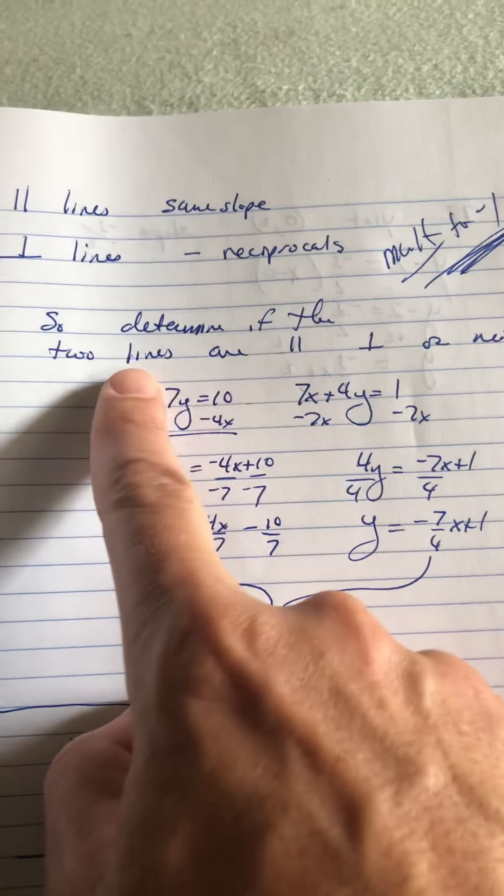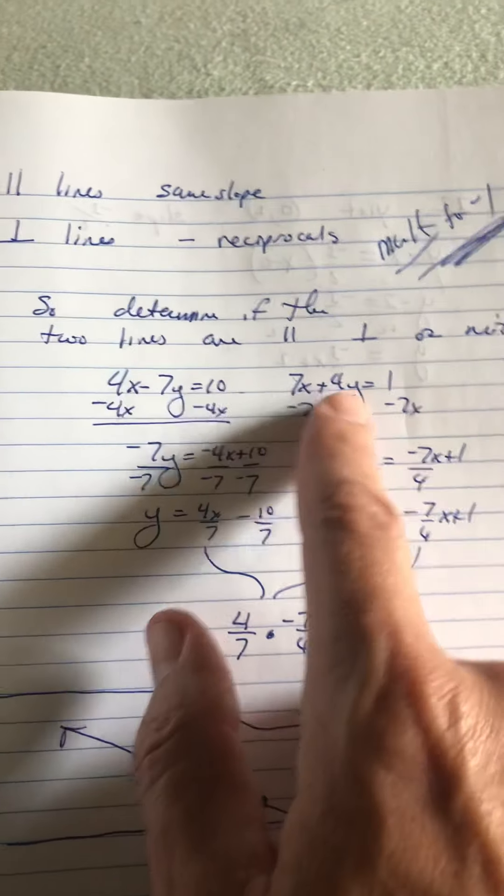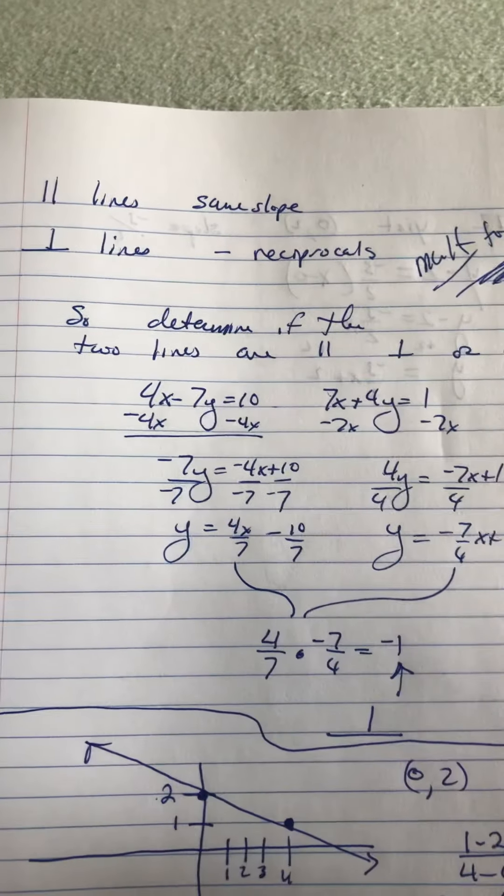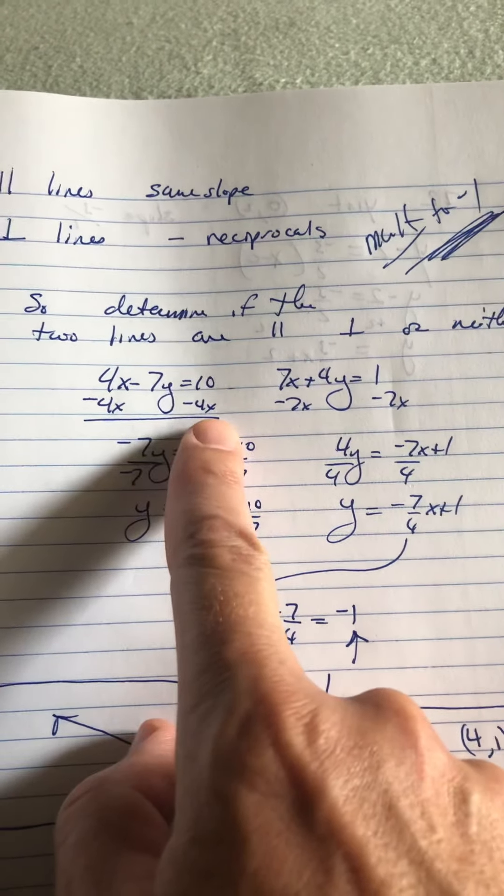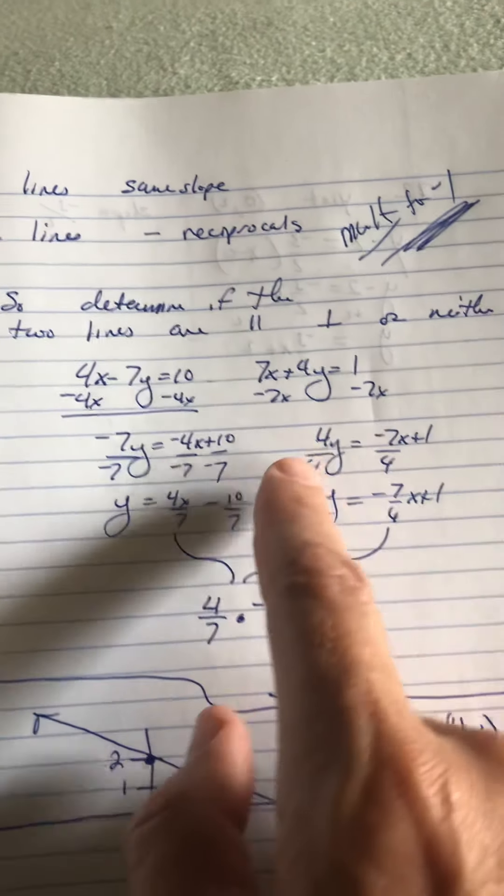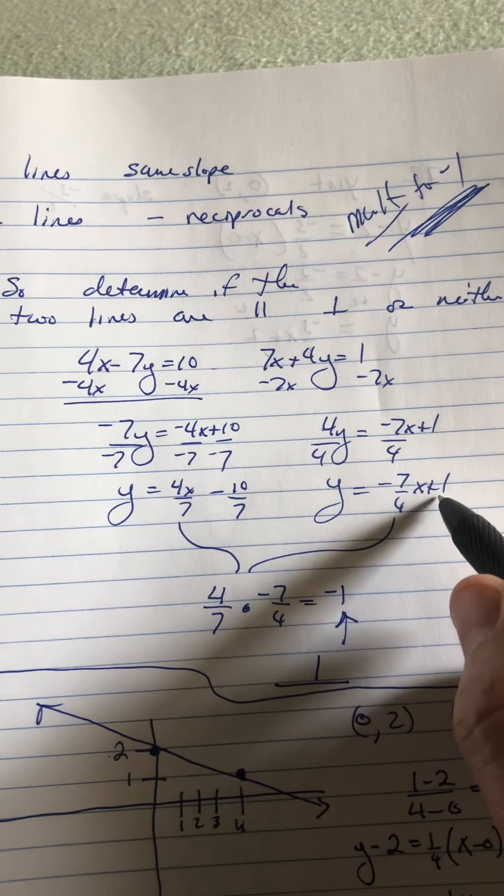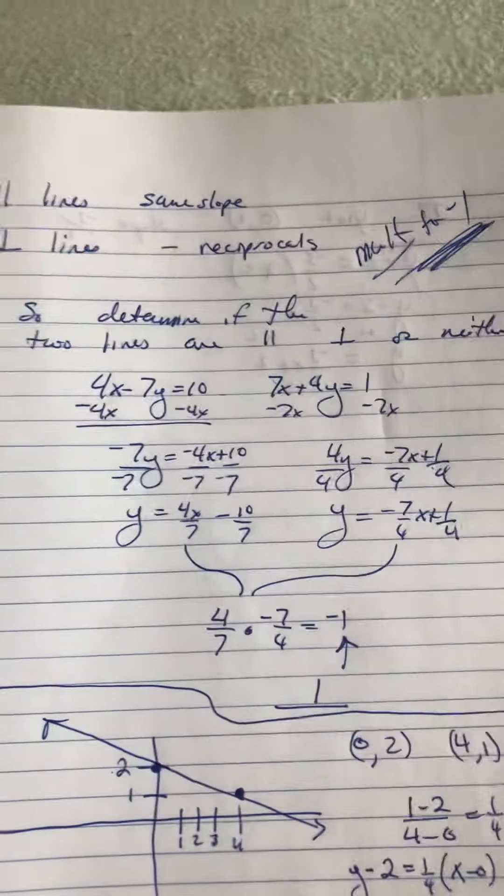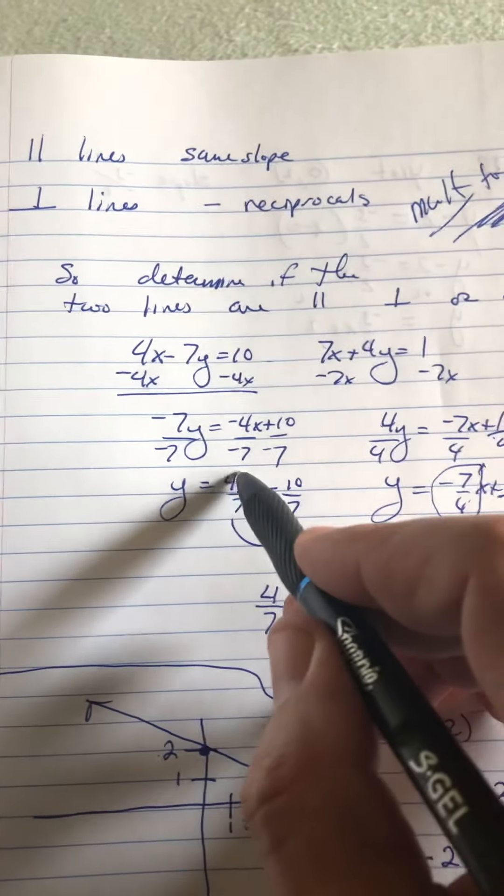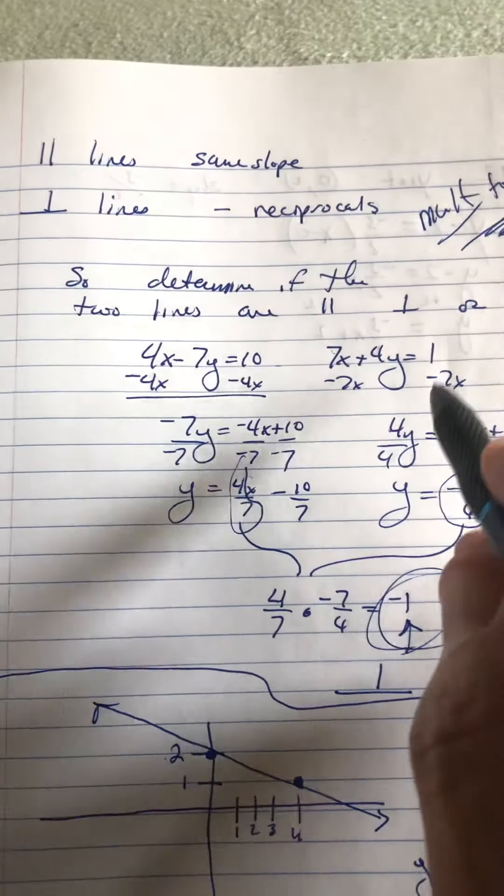All right. So, determine if two lines are parallel, perpendicular or neither. It's one of the types of problems that are in the book. So, they give us two equations. We have 4x minus 7y equals 10, and 7x plus 4y equals 1. And the trick is, solve them both for y. So, I minus 4x minus 4x, divide by negative 7, and I get 4 over 7 is the slope here. Here, I'm going to subtract 7x on both sides, divide by 4. I wasn't even focused on the y-intercept. Everything gets divided by 4, though. And then, we see the slope here is negative 7 over 4, and the slope here is 4 over 7. So, if I multiply them, I get negative 1. So, these two lines are perpendicular.